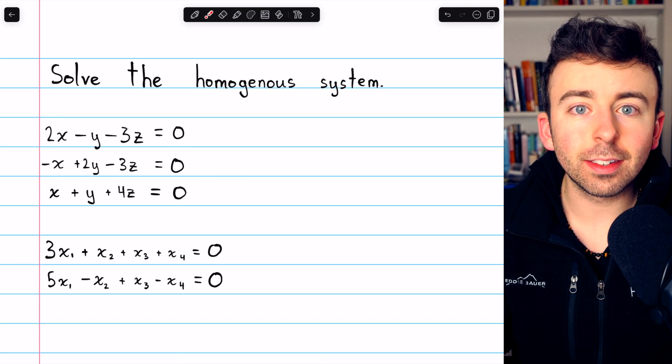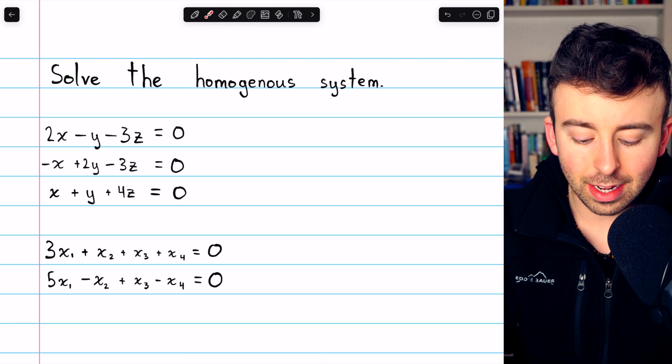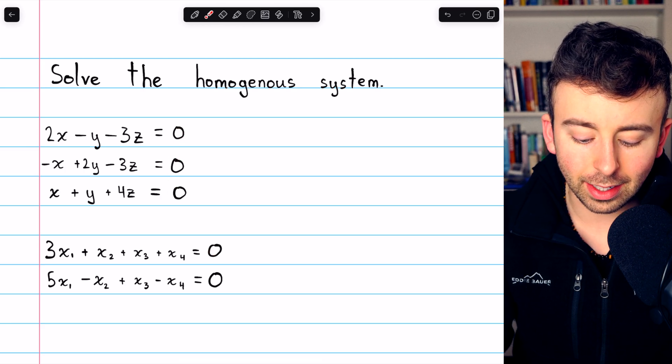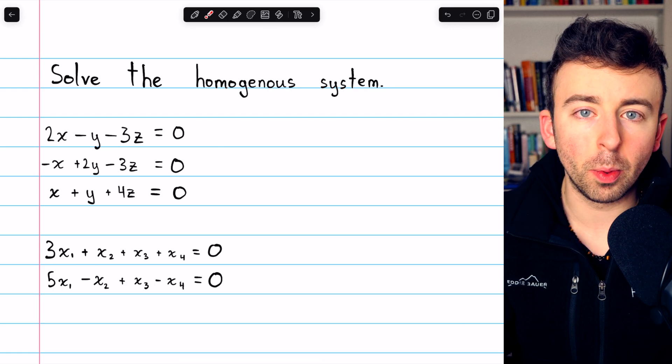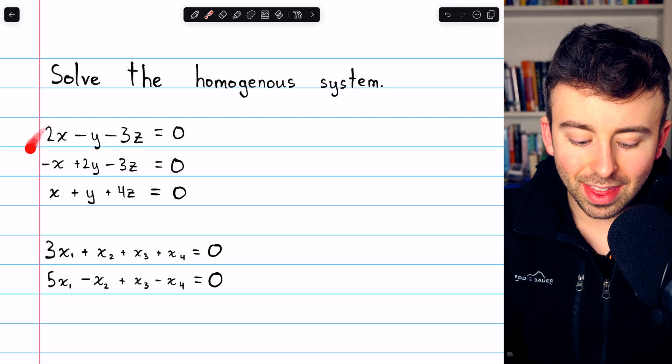I'll leave a link in the description to my lessons introducing homogeneous linear systems and Gaussian elimination. These are homogeneous systems because you can see the constants on the right side, in each case, are all zero. So that's what makes it homogeneous. Let's begin with this system.